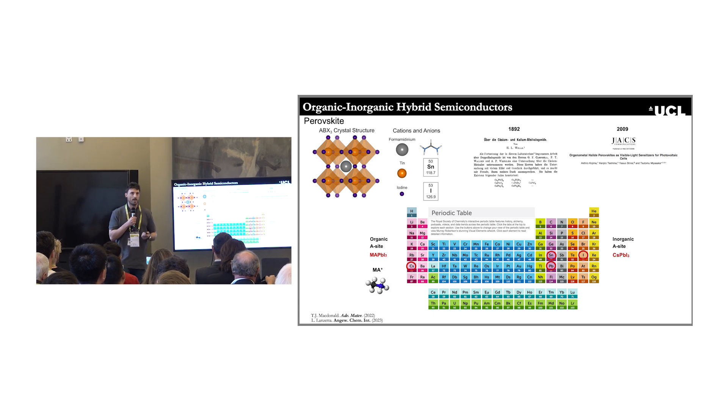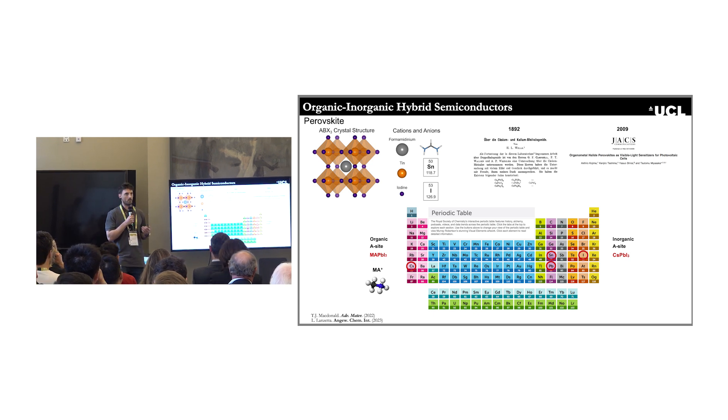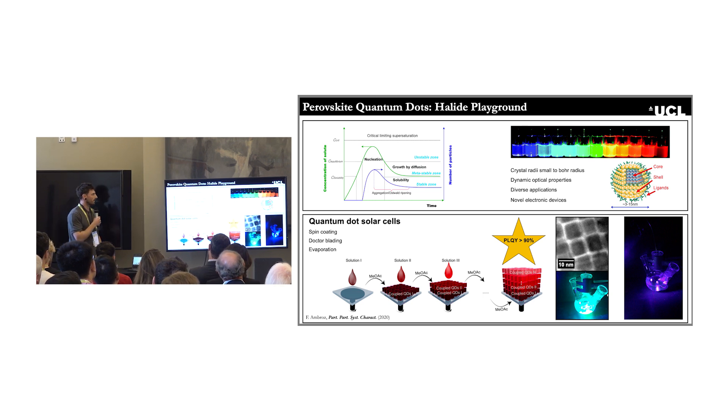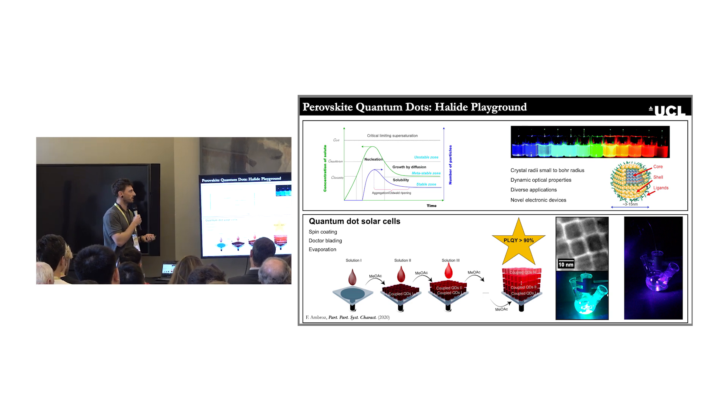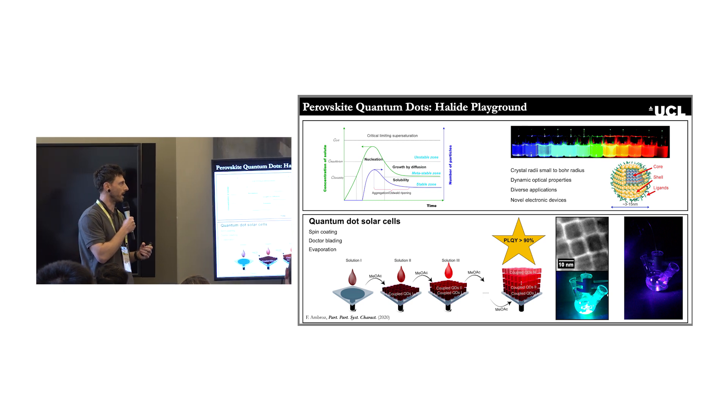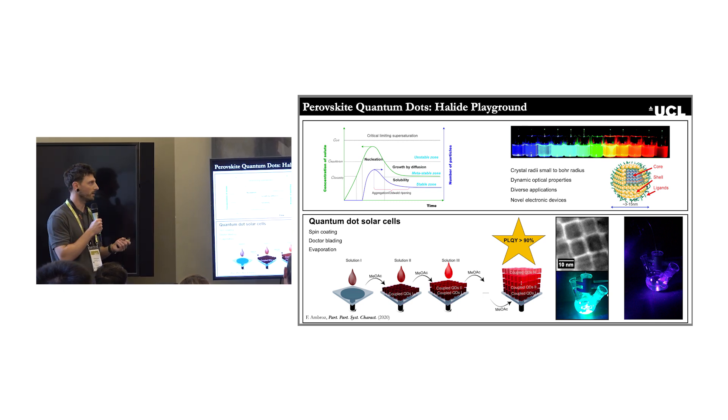Some of the materials that we work with are based around quantum-confined materials, so perovskite quantum dots. We also have worked in the past with indium phosphide systems or cadmium telluride, cadmium selenide. But with the perovskites, what we can do is engineer their composition to emit at certain wavelengths. This opens up what we call a halide playground, because we're able to say, okay, if we want a material that emits in the UV or the IR, we just need to know what composition to make. It's very straightforward. They can then be implemented into LEDs, solar cells, or other types of applications.